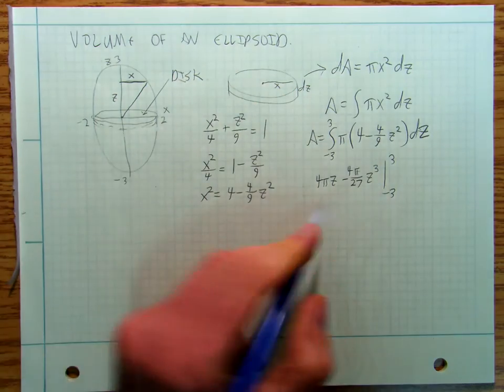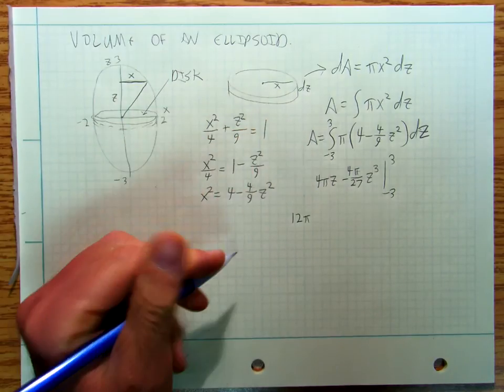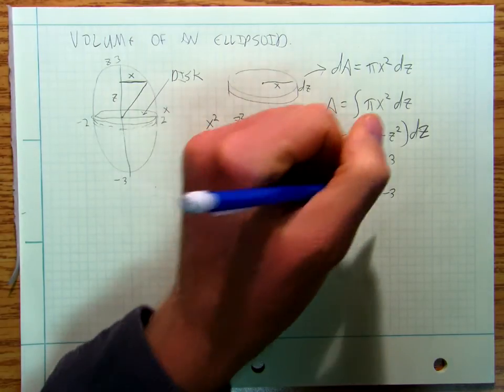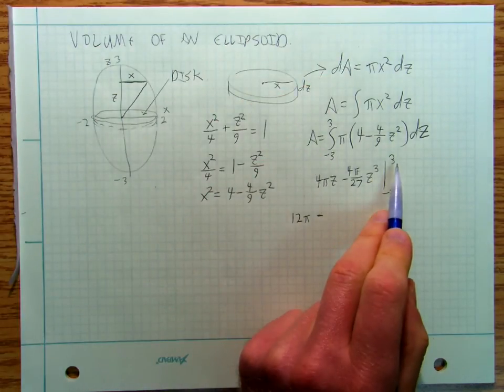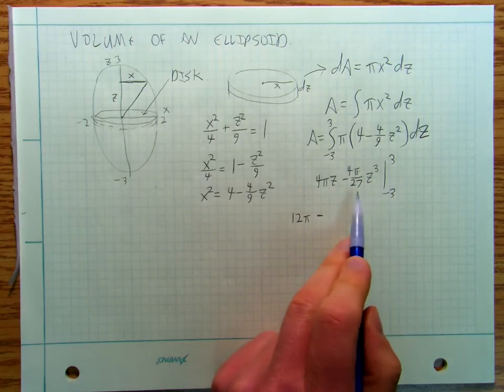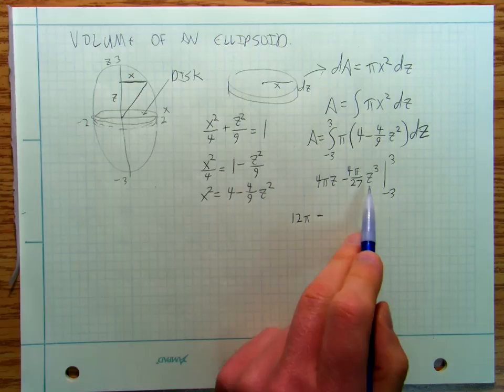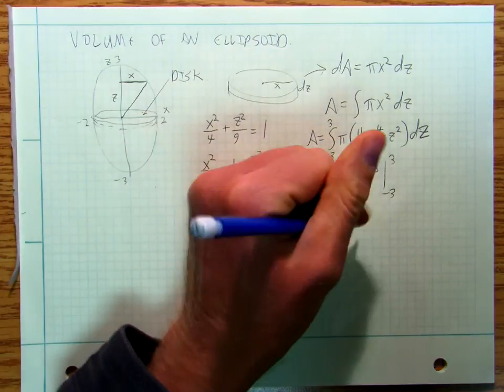So I'm going to get 12 pi minus, if I plug in 3, I'm going to get 3 cubed is 27, divided by 27 is 1.